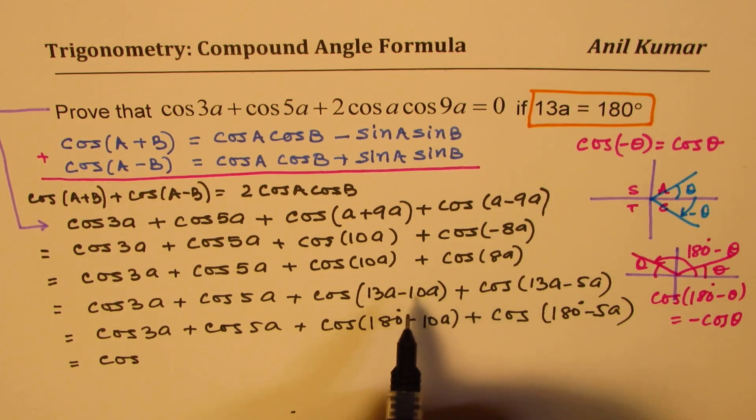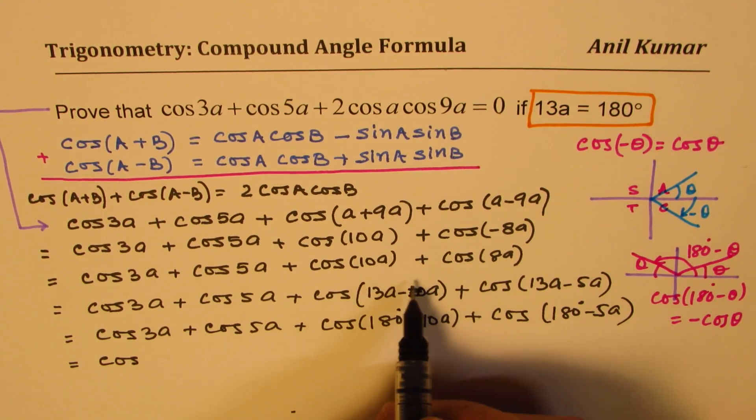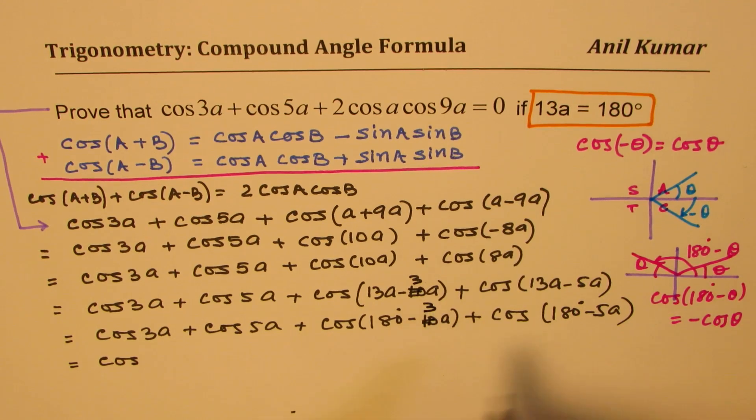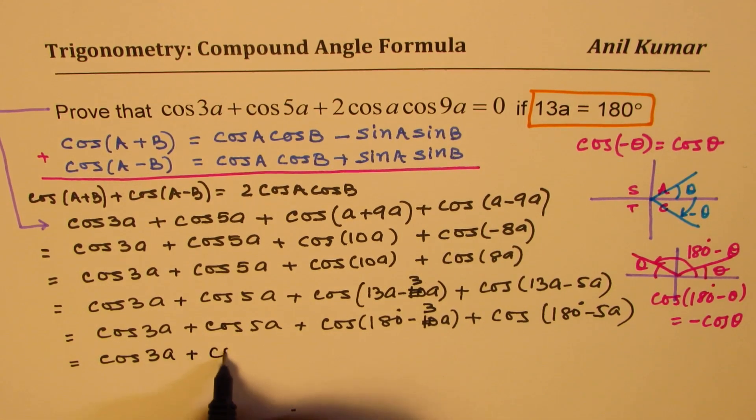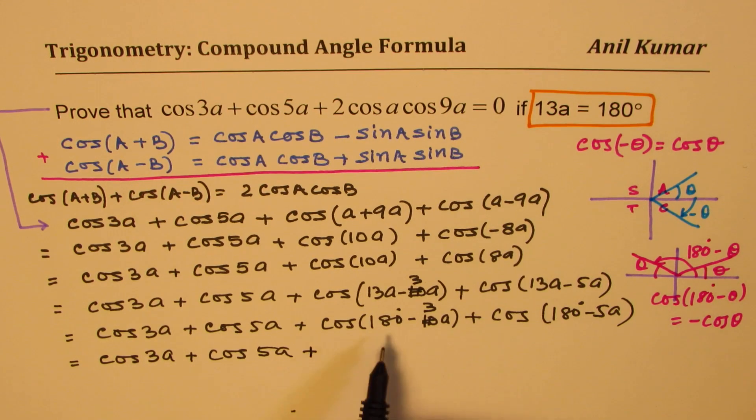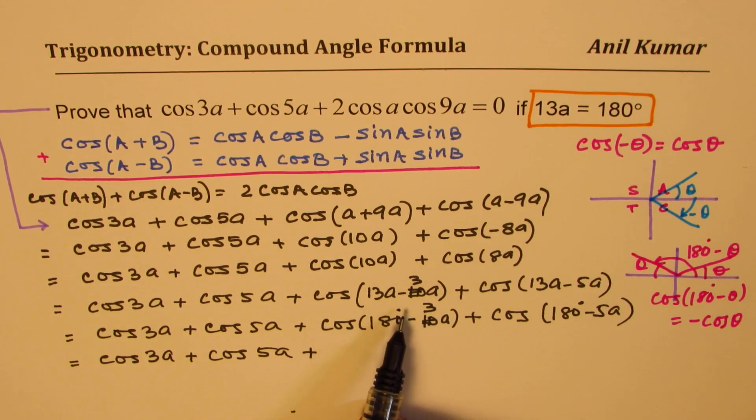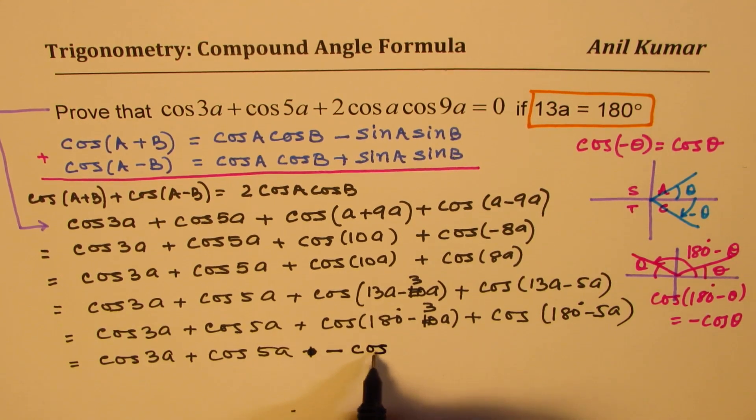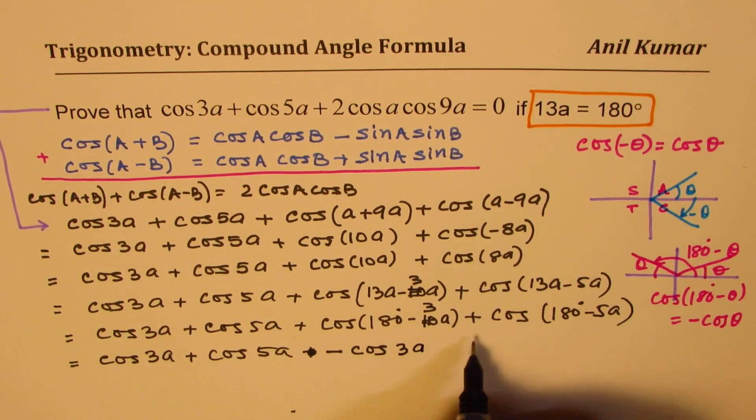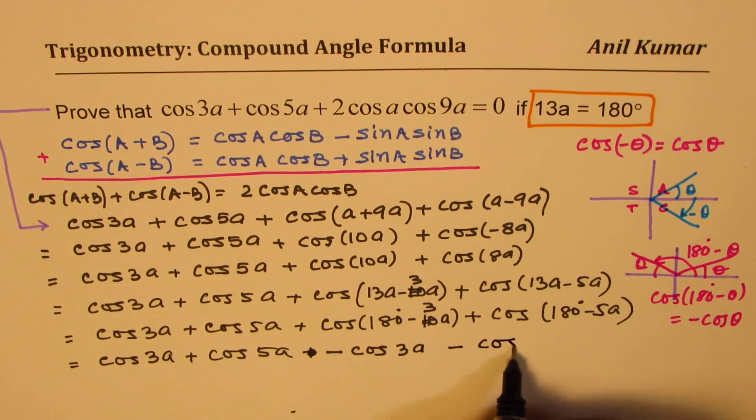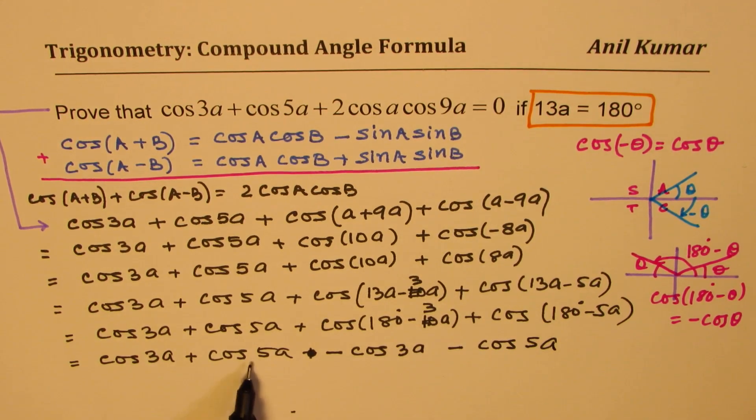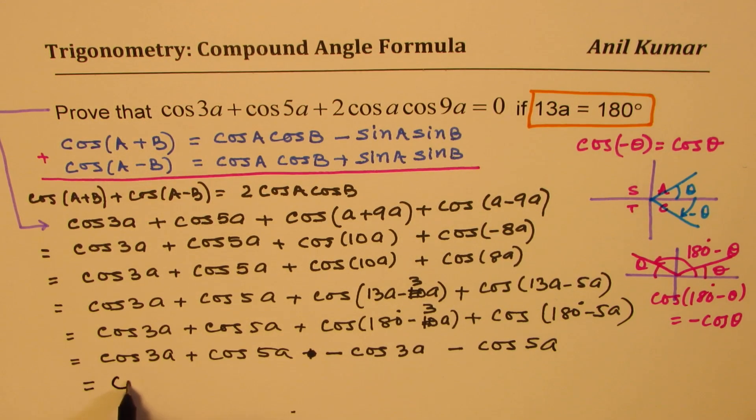So cos 3a plus cos 5a plus, now 180 minus 3a is negative cos 3a, and 180 minus 5a is negative cos 5a. Now from here these two terms cancel and we get this as equal to 0. So that is what we needed to prove, hence proved.